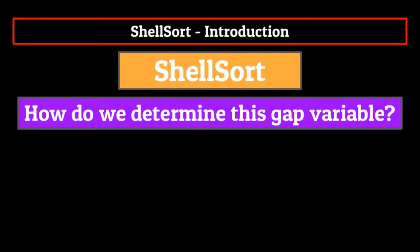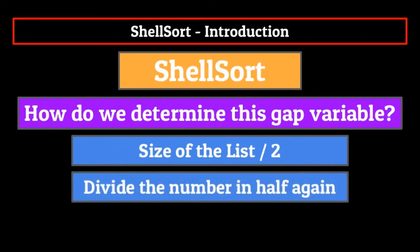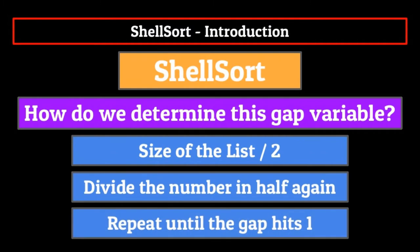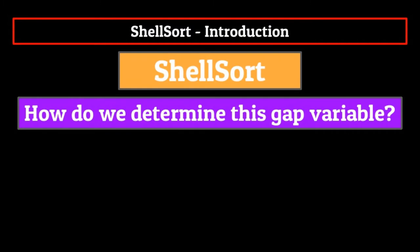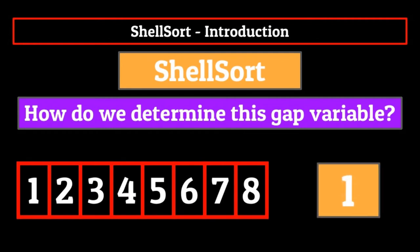Generally, we start with the size of the list divided by two, since this takes care of any large jumps in the data that need to be made. Then the most common practice is to divide that number in half again and again until it hits one. So for example, in a list of eight elements, the gap would start off at four, then two, and then one. Once the gap hits one, that's when we simply end up performing a basic insertion sort, since a sublist with elements one space apart from each other will just end up being the entire list.